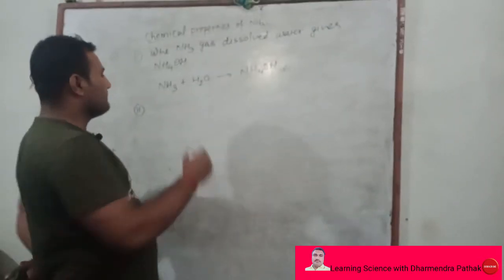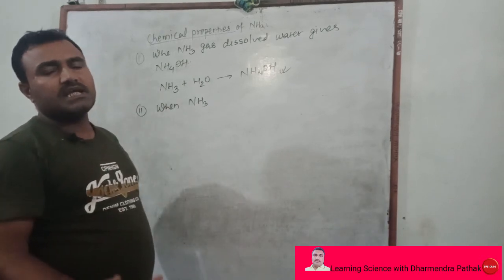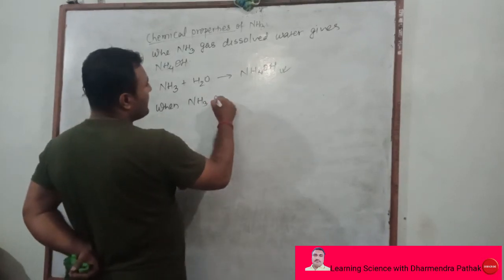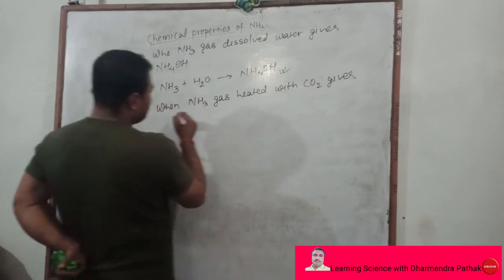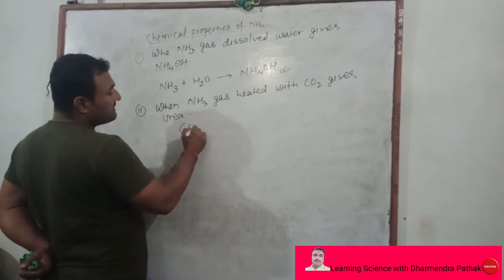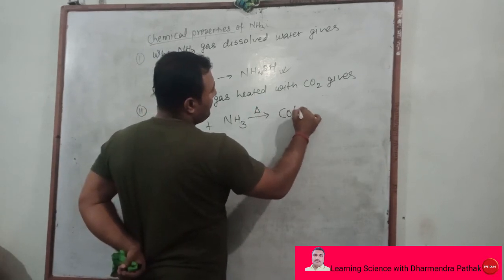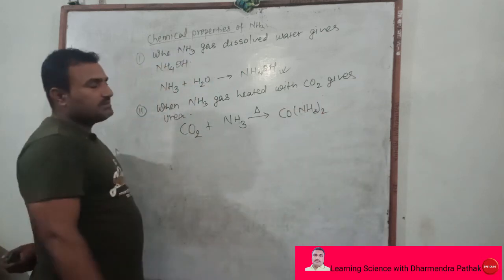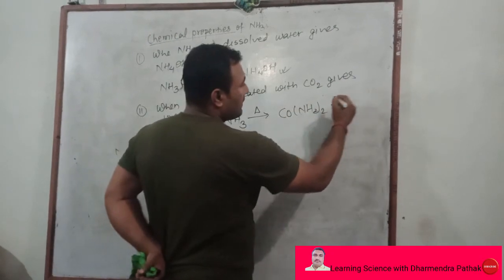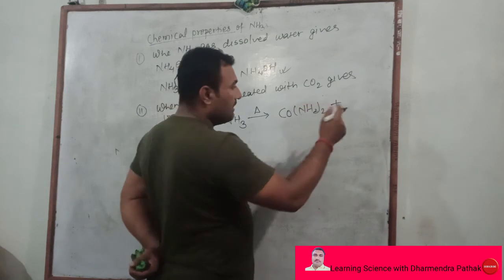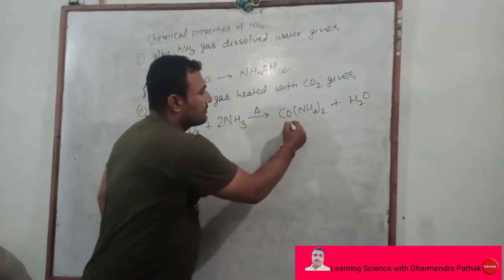Another important chemical property: when ammonia gas is heated with carbon dioxide at high temperature, it changes into urea. The chemical reaction is: CO2 + 2NH3 → CO(NH2)2 + H2O. The molecular formula of urea is CO(NH2)2, containing two amide groups. Urea is an organic compound made from inorganic chemicals and is also known as the first organic compound prepared in a laboratory.